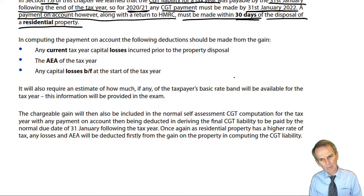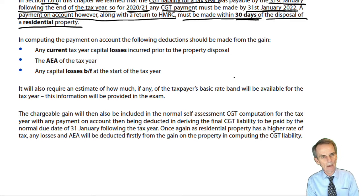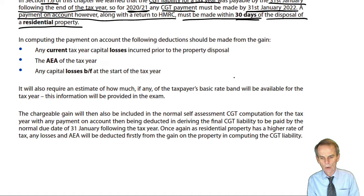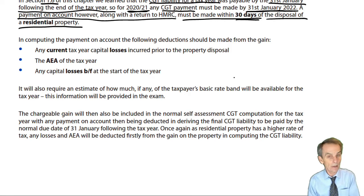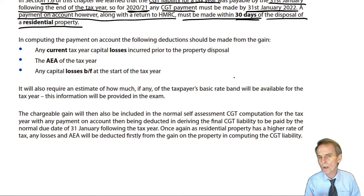You'll remember that against any gain made in the tax year there are various deductions available: firstly, net out gains and losses of the tax year; then we have the AEA available; and if after that there's still a taxable gain, then losses brought forward would be used. So when looking at this one-off disposal of residential property part way through the tax year and demanding this very immediate CGT payment, what do we set off against that gain to work out the CGT liability?